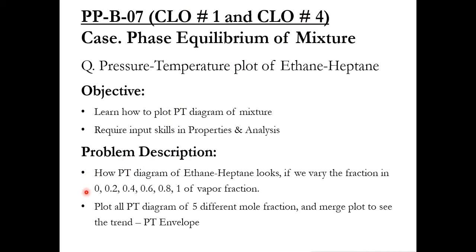In the problem description, we have been given two tasks. Task one: how the PT diagram of ethane-heptane looks if we vary the vapor fraction from 0 to 1 with a step size of 0.2, and observe what type of PT diagram we get. If you remember the phase diagram PT envelope, it should be some sort of an envelope as depicted in the literature. Task two: plot all PT diagrams of five different mole fractions and merge the plots to see the trend of PT envelopes.